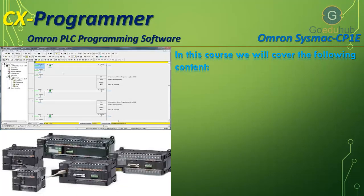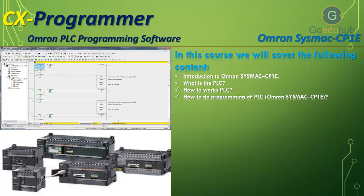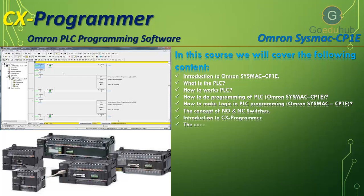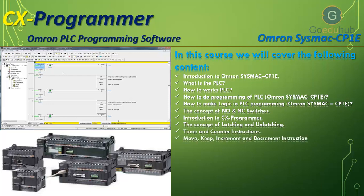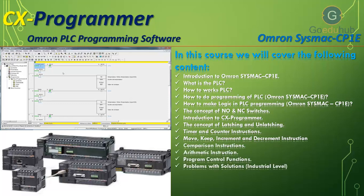The content we are going to cover in this course includes: introduction to OMRON Sysmac CP1E; what is a PLC and how to work with PLC; how to do programming of PLC; how to make logic in PLC programming; the concept of NO and NC switches; introduction to CX Programmer; the concept of latching and unlatching; timer and counter instructions; move, keep, increment and decrement instructions; comparison instructions; arithmetic instructions; program control functions. We have also solved some industrial-level problems with every topic so we can understand where and how to use each instruction.